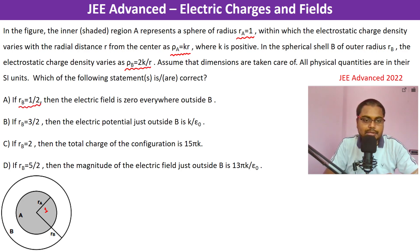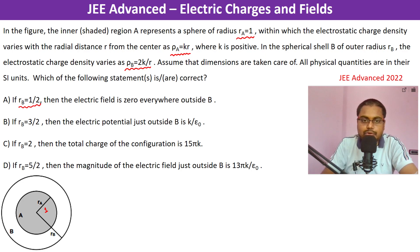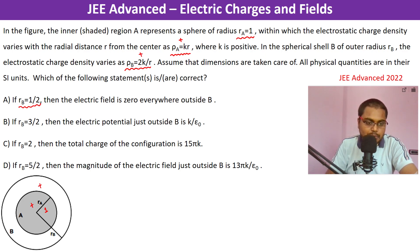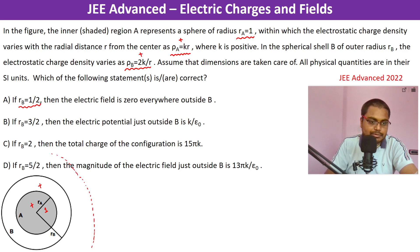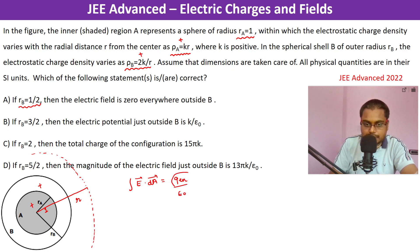For option A, if r_b equals half, the electric field is zero everywhere outside B. Note that rho_a = k·r and k is positive, so the charge inside the sphere is positive, and in the shell it is also positive. Since positive charge is throughout, if we consider a Gaussian surface of radius r outside, by Gauss's law: ∮ E·dA = Q_enclosed / ε₀. Q_enclosed has to be positive.